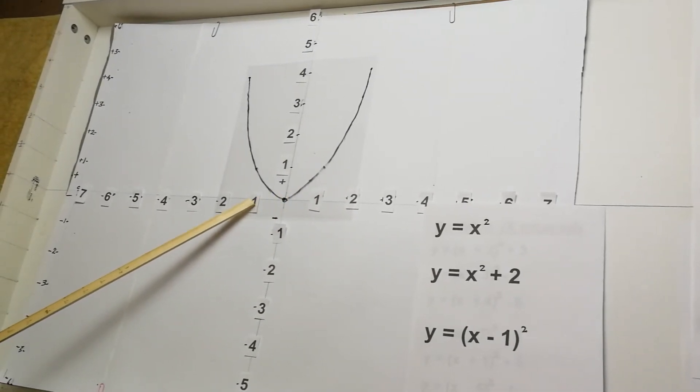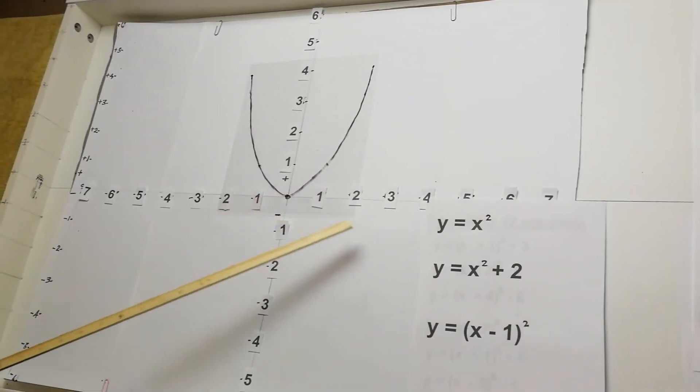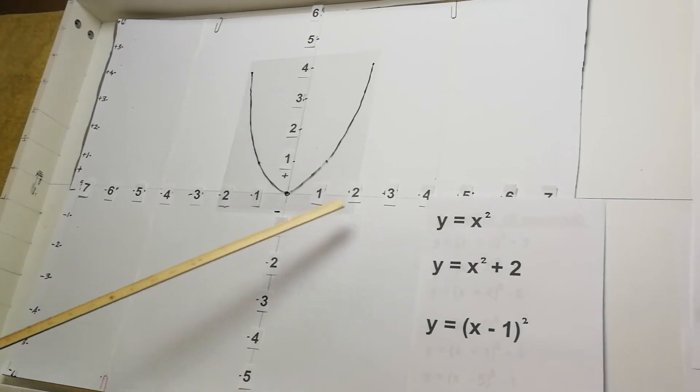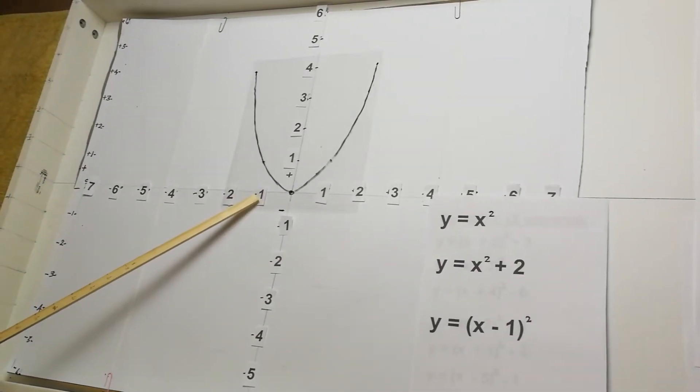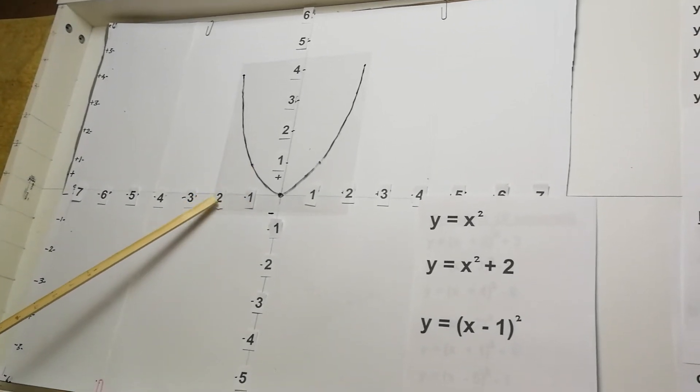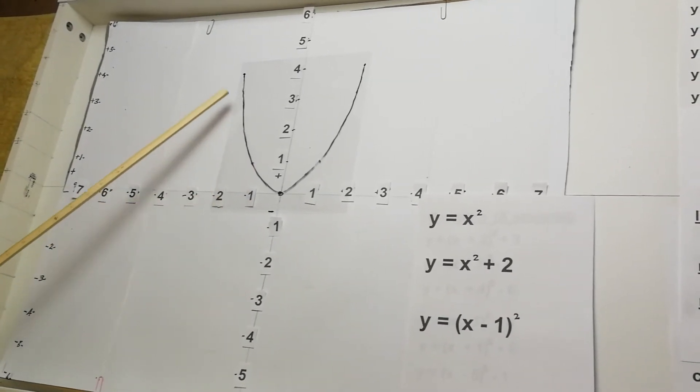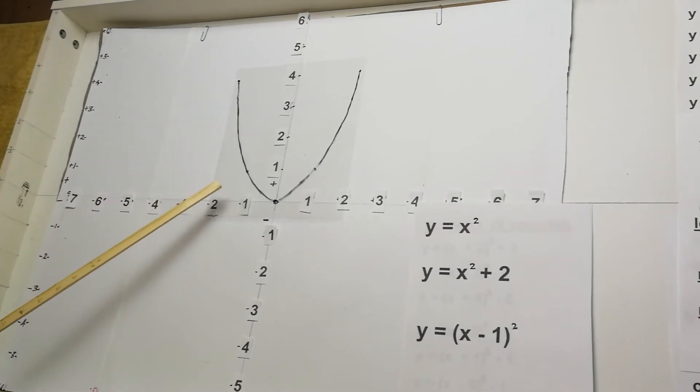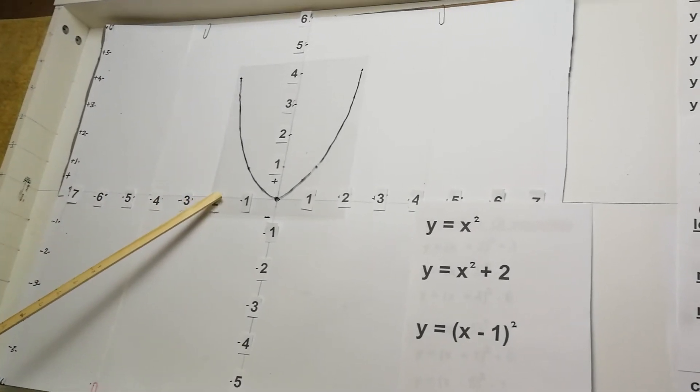When we get to the negative side, because y is x squared, when x is negative 1, if we square negative 1, we get positive 1. If we square negative 2, we get positive 4. And this is basically how we end up with the shape of a parabola.